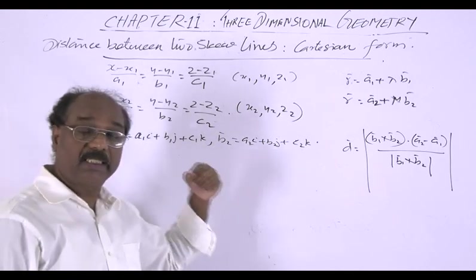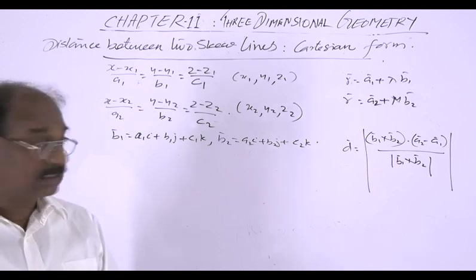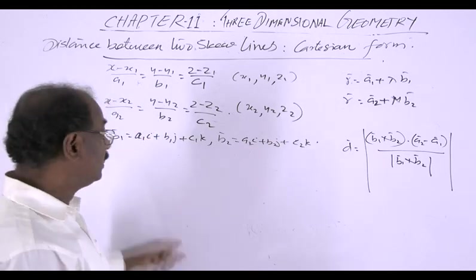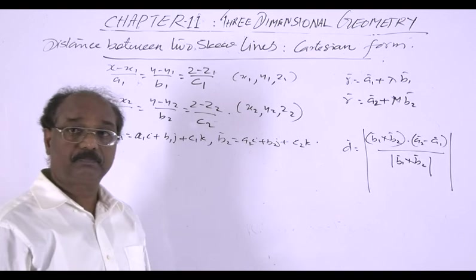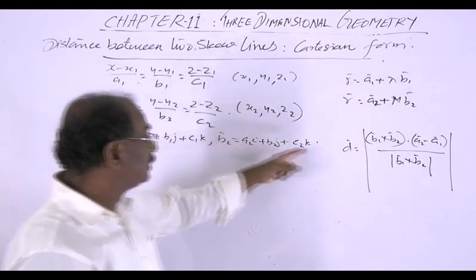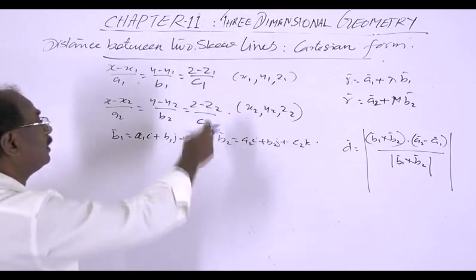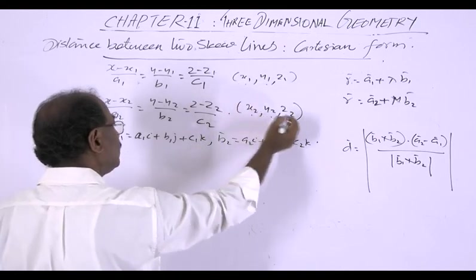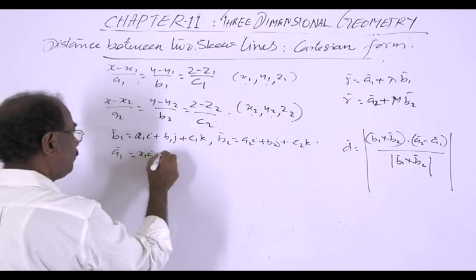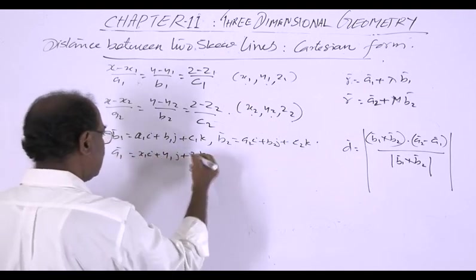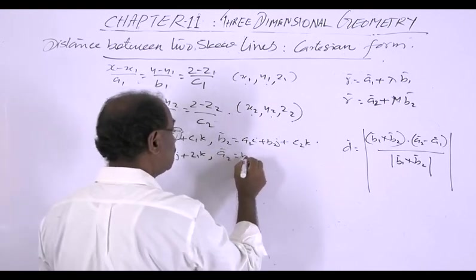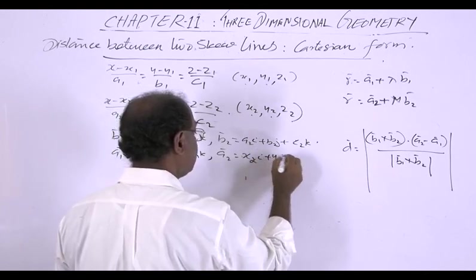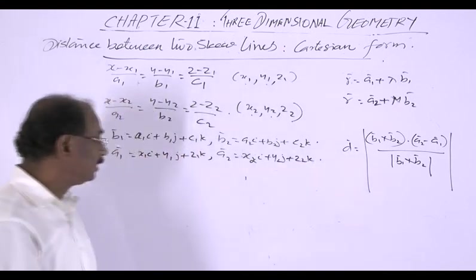So these are the situations in the Cartesian form. Then the distance is given by this. So the only method remaining is find this v1 cross v2, find this a2 minus a1. So we have the two points. And therefore this a1 is equal to x1 i plus y1 j plus z1 k and this a2 is equal to x2 i plus y2 j plus z2 k. So we have this a1 and a2.